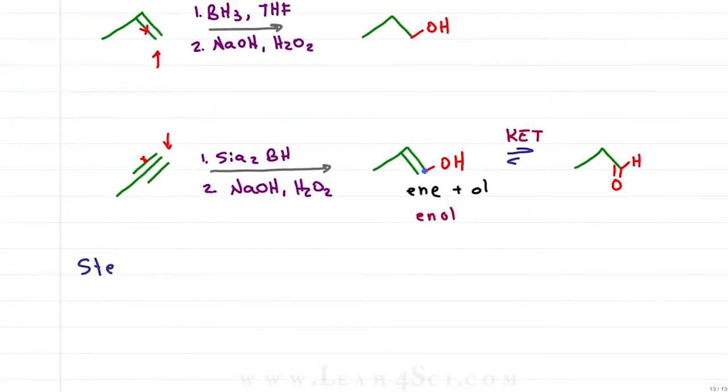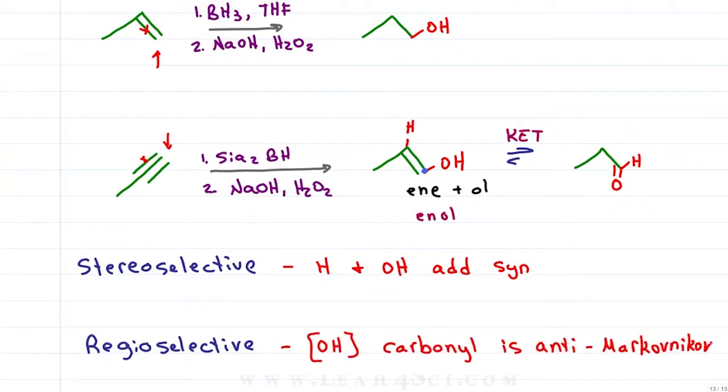This reaction is stereoselective in that the alcohol and hydrogen add syn to the same face of the pi bond that broke, and regioselective in that if we have a terminal alkyne, the alcohol and therefore the carbonyl will follow anti-Markovnikov addition onto the terminal carbon.